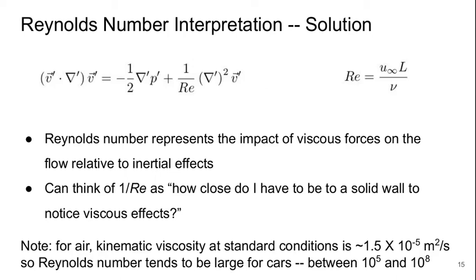If we want to get a sense of what kind of a reasonable Reynolds number would be for air, the kinematic viscosity at standard conditions is about 1.5 times 10 to the minus 5 meters squared per second. So the Reynolds number for cars tends to be pretty large. The length scale is a few meters.